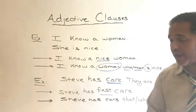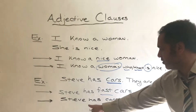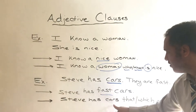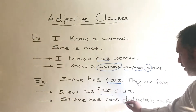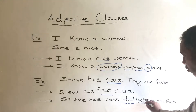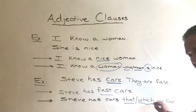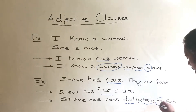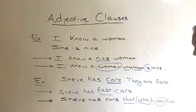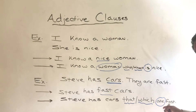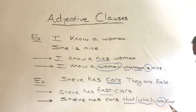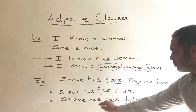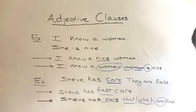Another way is by using adjective clauses. 'Steve has cars that are fast' or 'Steve has cars which are fast.' It's very important that you need to change the verb. I say 'are fast' because we are talking about cars.